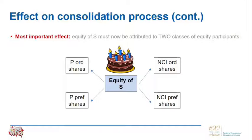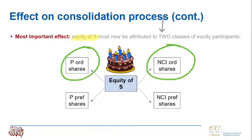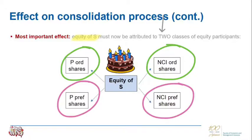When the equity of the subsidiary now includes preference share capital and there are more equity participants, the most important effect on the consolidation process is that the equity of S must now be attributed to two classes of equity participants. Up until this point, we have attributed the equity of the subsidiary only to the ordinary shareholder equity participants — either on the timeline or in the analysis of equity. But now that same equity of S needs to be attributed to more equity participants, with the preference shareholders also being equity participants of the subsidiary.